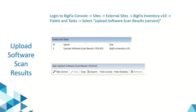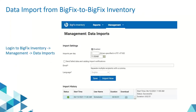Now let's discuss the last step, which needs to be performed in BigFix Inventory. Log into BigFix Inventory, go to Management and then Data Imports. Here you'll see a page where you can perform a data import. You can schedule a data import, or run a manual import by clicking on the Import Now button. Once your import is completed, all the information will be available in BigFix Inventory.